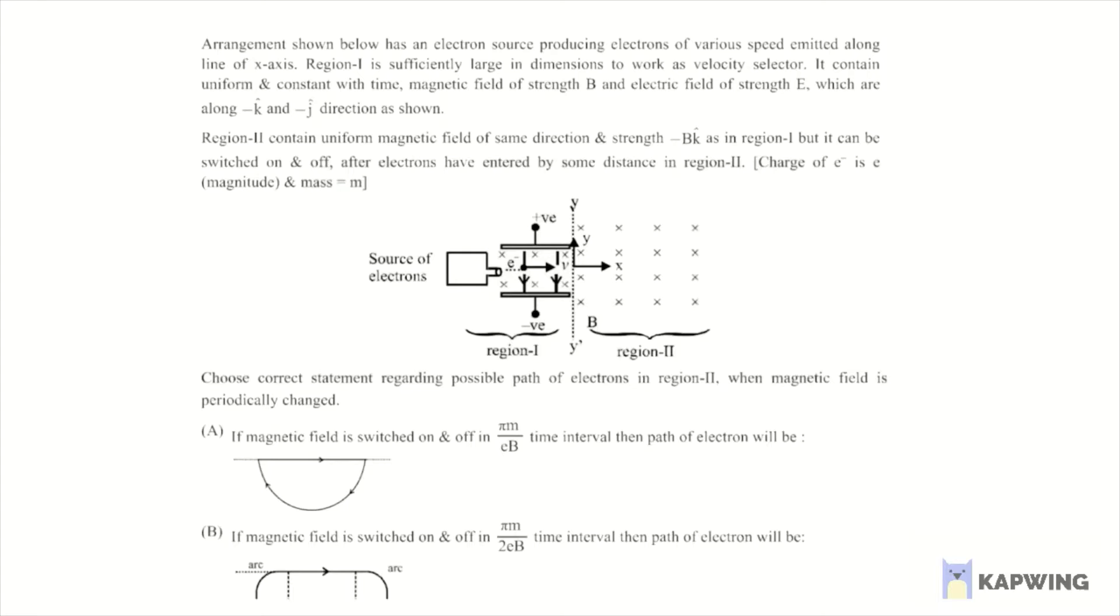So electrons are basically thrown with the speed where velocity will be E by B. So we can write for the solution here that velocity is basically equal to E by B.